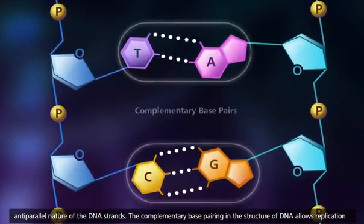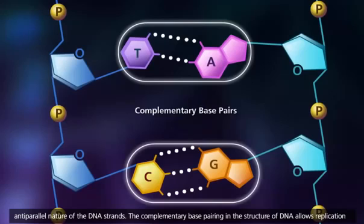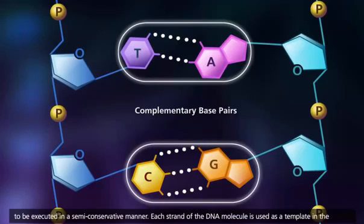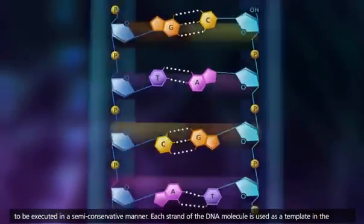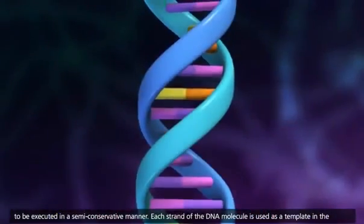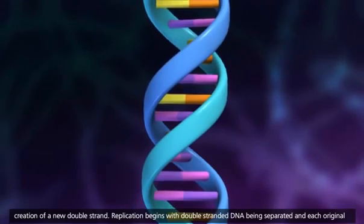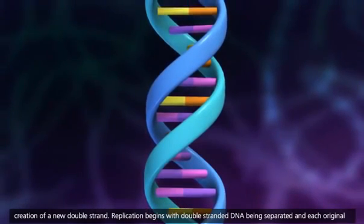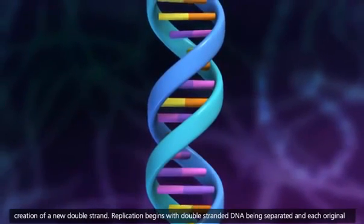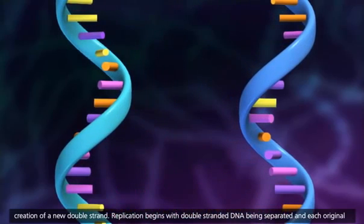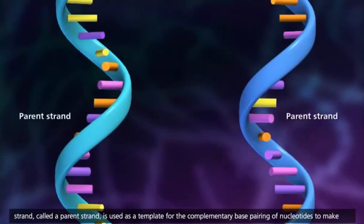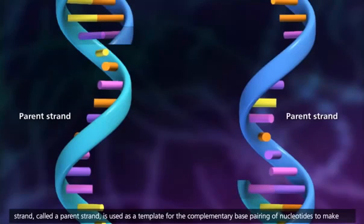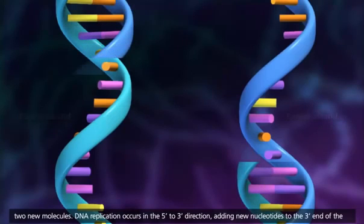The complementary base pairing in the structure of DNA allows replication to be executed in a semi-conservative manner. Each strand of the DNA molecule is used as a template in the creation of a new double strand. Replication begins with double-stranded DNA being separated, and each original strand, called a parent strand, is used as a template for the complementary base pairing of nucleotides to make two new molecules.